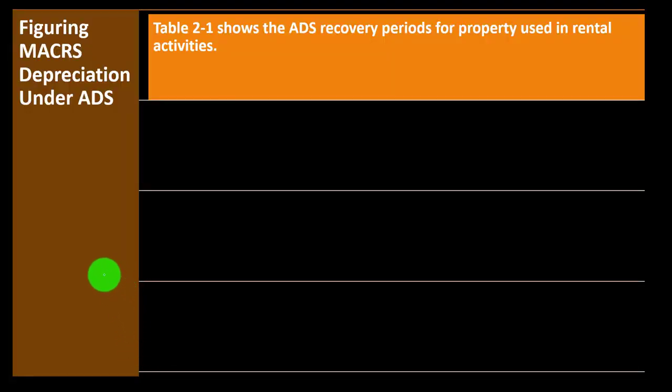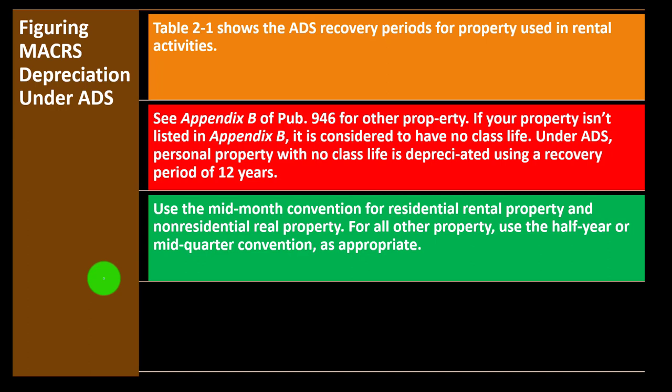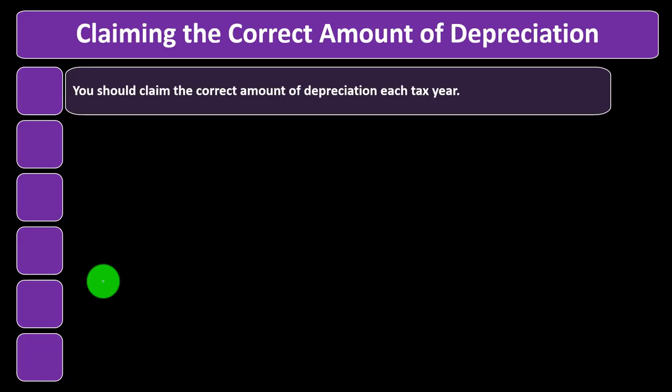For ADS depreciation, Table 2-1 shows the ADS recovery periods for property used in rental activities. See Appendix B of Publication 946 for other property. Property not listed in Appendix B has no class life; under ADS, personal property with no class life is depreciated using a recovery period of 12 years. Use the mid-month convention for residential and non-residential rental property, and the half-year or mid-quarter convention as appropriate for all other property.